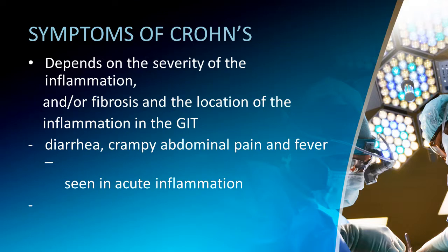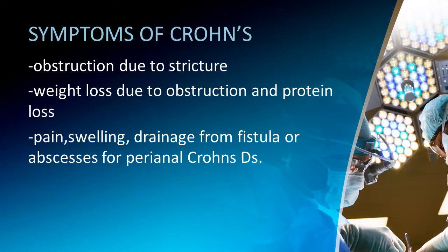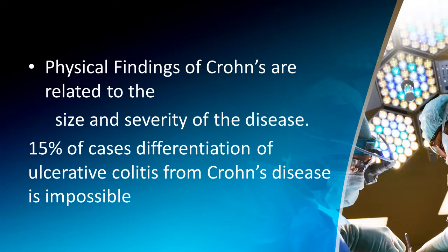Crohn's disease symptoms depend on the severity of inflammation and/or fibrosis and the location of inflammation in the GI tract. You may see diarrhea, crampy abdominal pain, and fever as seen in acute inflammation. Obstruction due to stricture and weight loss due to obstruction and protein loss are also seen. Pain, swelling, and drainage from fistulas or abscesses may occur in perianal Crohn's disease. In 15% of cases, differentiation of ulcerative colitis from Crohn's disease is impossible.